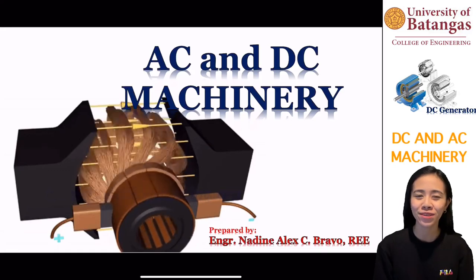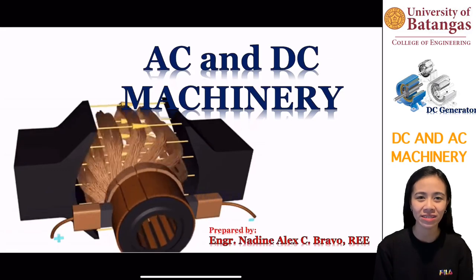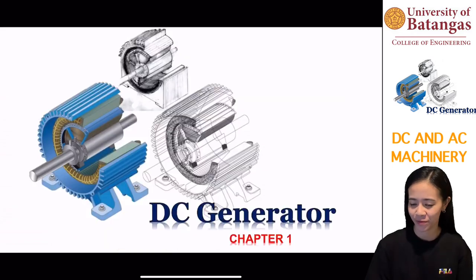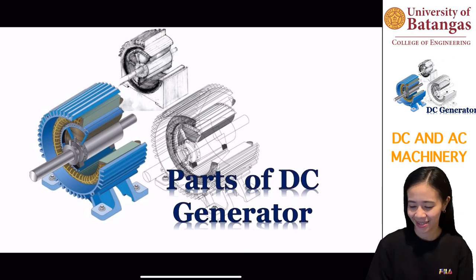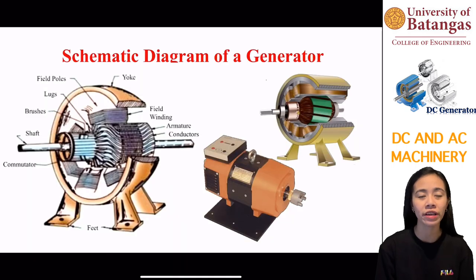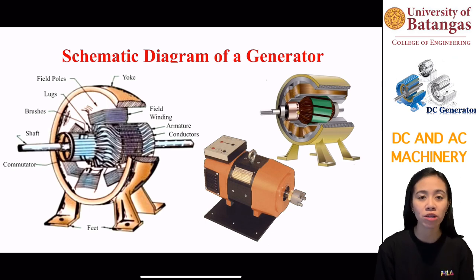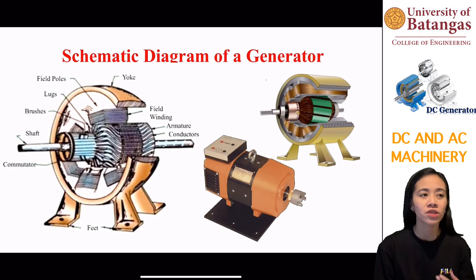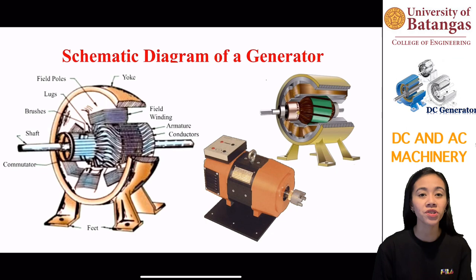Hi, welcome to a new video on AC and DC machines. Today we are going to talk about the different parts of a DC generator. Generally, DC machines can be called a dynamo. Dynamos are defined to be rotating machines wherein energy transformation takes place.